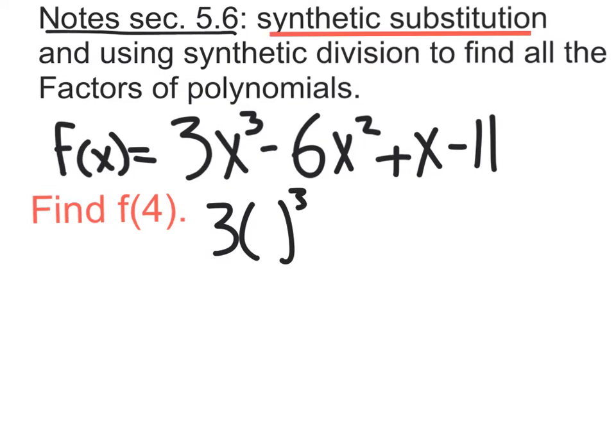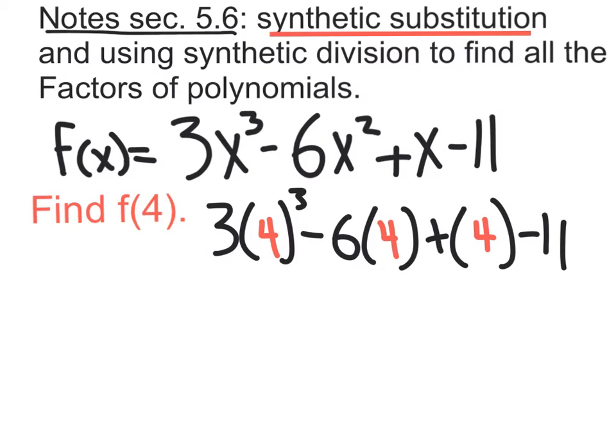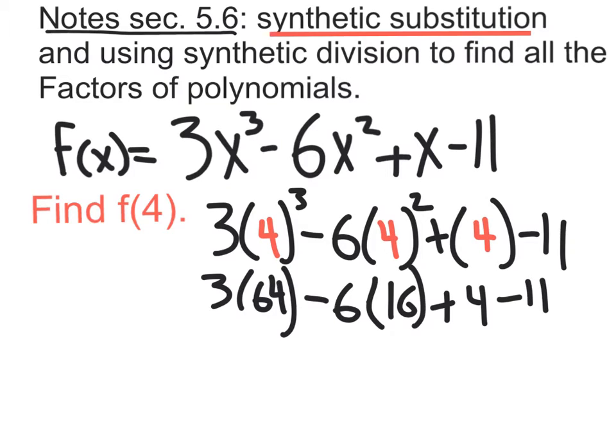So we're plugging in 4 right here. I forgot the square on the x squared. And now when we work this out, 4 to the 3rd is 64, so we have 3 times 64. We have 4 squared, that's 16, so we have minus 6 times 16. And we also have plus 4 and minus 11. 3 times 64, and 6 times 16 is 96. Let's bring down the plus 4 and the minus 11.